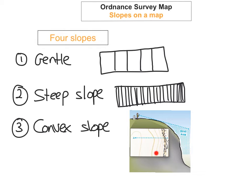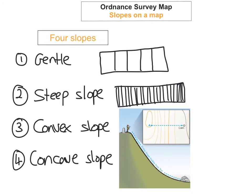The next slope is the convex slope. This is when the contour lines are far apart and then suddenly become really close. As you can see here, in real life it's really flat and then all of a sudden there's a big drop, which is why the contour lines go from far apart to really close.